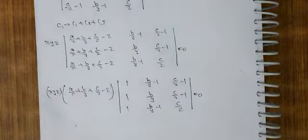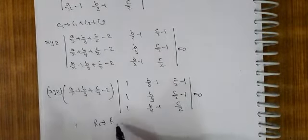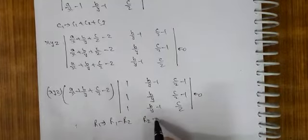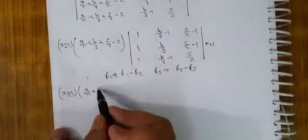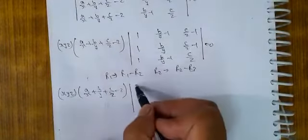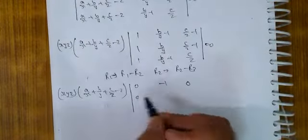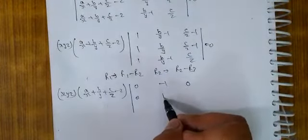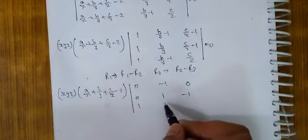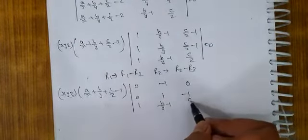अब एक काम करते हैं — 1 की जगह 0 बनाते हैं। यह तो R1 में लेना है, R2 में लेना है। R1 changes to R1 minus R2, and R2 changes to R2 minus R3। X, Y, Z — A upon X plus B upon Y plus C upon Z minus 2। R1 और R2 को minus कराओ: 0, इन दोनों को minus कराओ: 0, क्योंकि same term है। 0, 1, 1, B upon Y minus 1, and C upon Z.